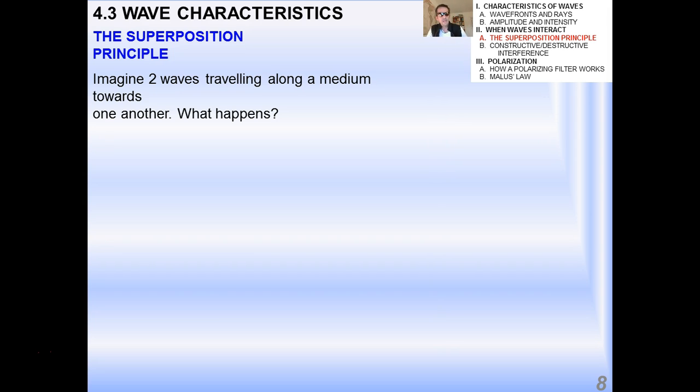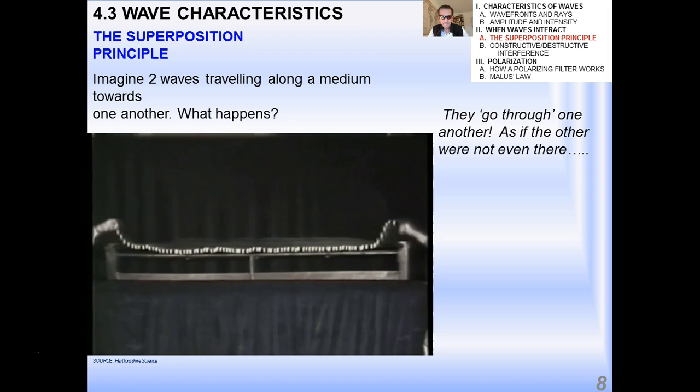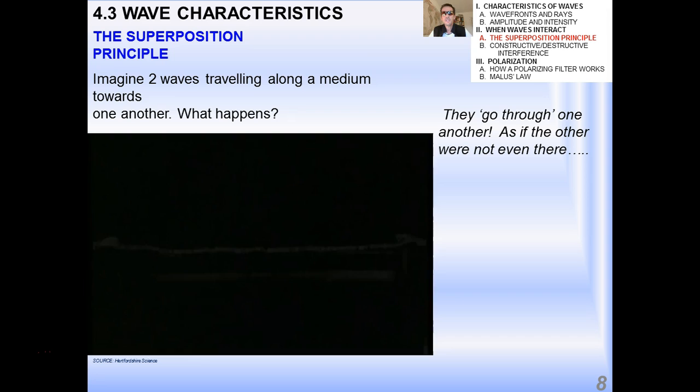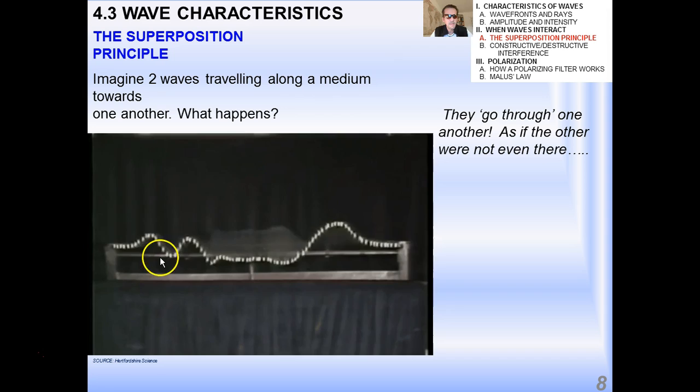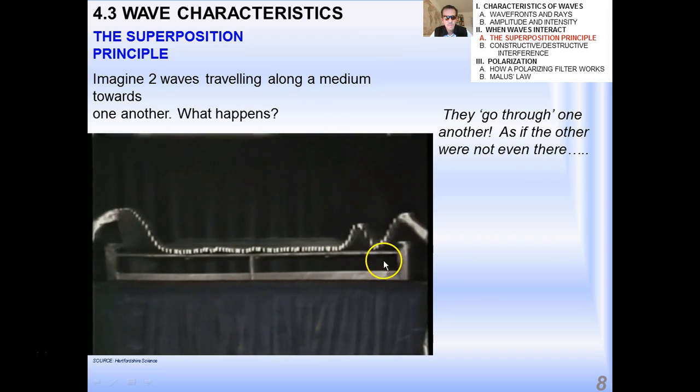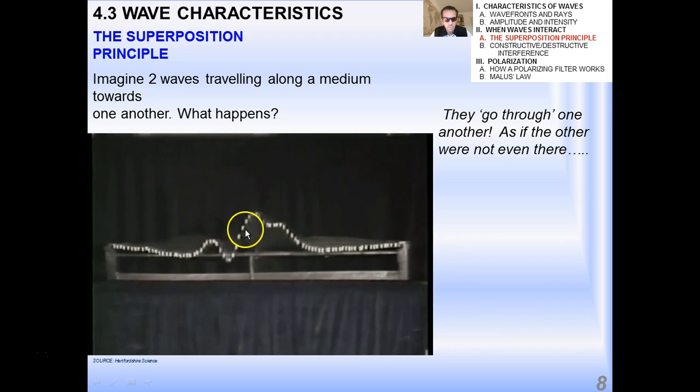Now imagine if you have two waves traveling along a medium towards one another. What exactly happens as they go through one another? Because remember, waves can go through one another because waves are nothing more than the transport of energy through a medium. So energy can pass through, one pulse of energy can pass through another pulse of energy. What they do is they go through one another as if the other were not even there.